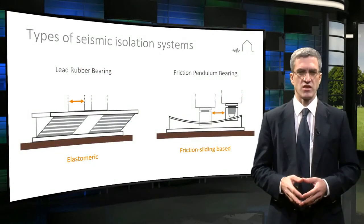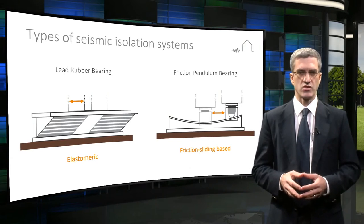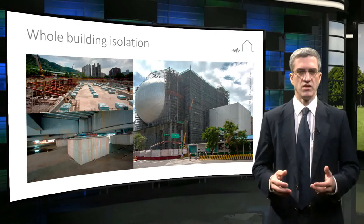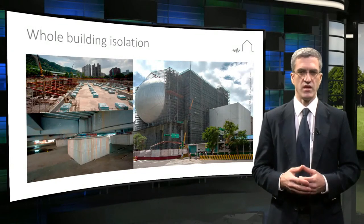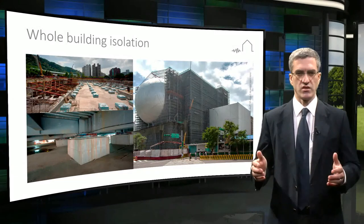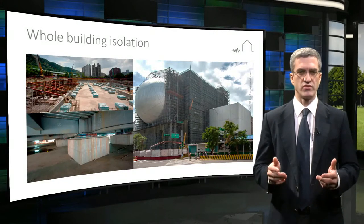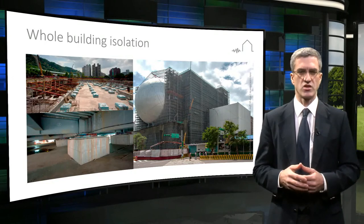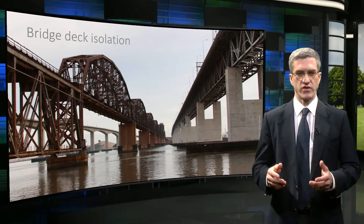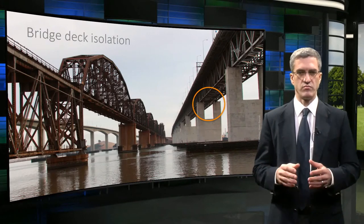The first modern engineered seismic isolation systems emerged in the 1970s, and the main types in current use are elastomeric and friction-sliding based isolators. An example of a whole building isolation is the Taipei Performing Arts Centre. In this case, base isolation reduced the expected seismic forces by about 60%, resulting in lower material consumption and simpler detailing. The building is also expected to have less damage after an earthquake compared to conventional construction. The Benicio Martinez Bridge in California uses friction pendulum base isolators. The isolators sit between the reinforced concrete piers and the bridge deck.